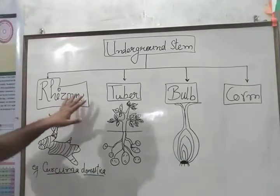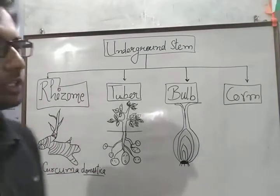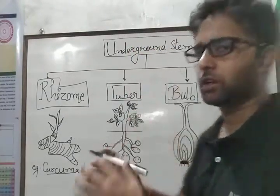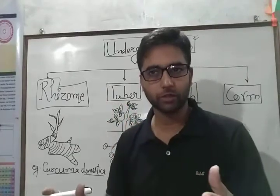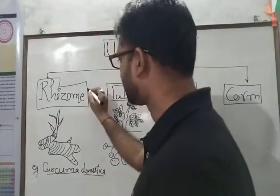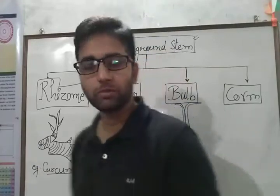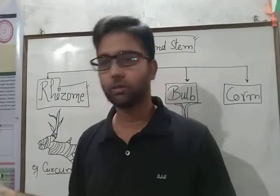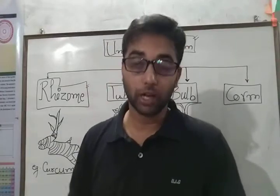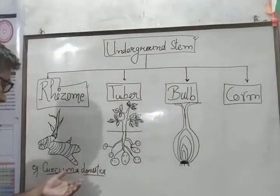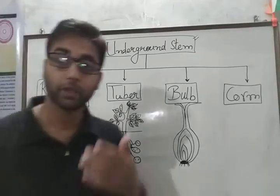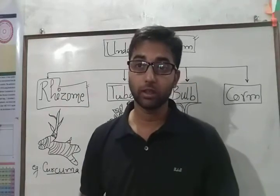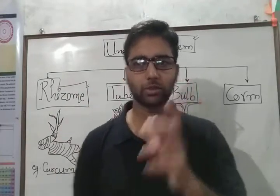The very first structure of natural vegetative propagation is underground stem, and there are many types of underground stem modifications. The first one is rhizome. Rhizome is naturally seen everywhere — near about in our kitchens and kitchen gardens. The best examples are Curcuma domestica (turmeric), Zingiber officinale (ginger), Musa paradisiaca (banana), and Canna indica (canna).